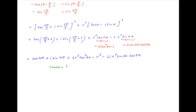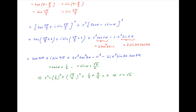We had assumed earlier that r cos alpha is equal to half and r sin alpha is equal to root 7 upon 2. Taking the square of both equations and adding, we get r squared is equal to half squared plus root 7 upon 2 squared, which is equal to 1 upon 4 plus 7 upon 4, which is equal to 2. Therefore r is equal to root 2.